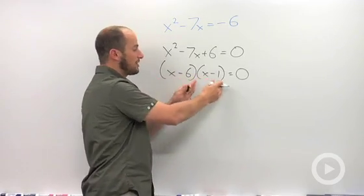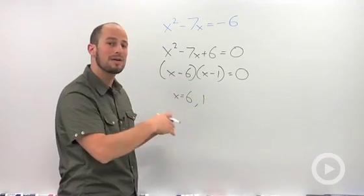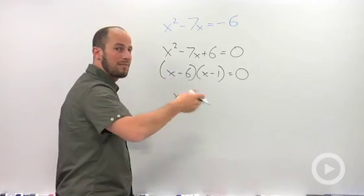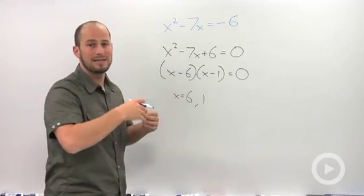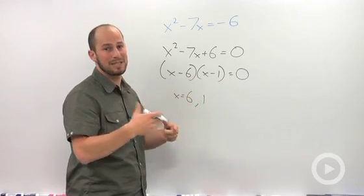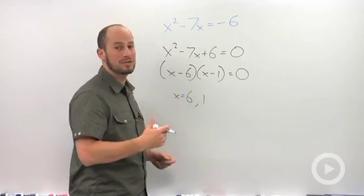As long as one of these terms is zero, you multiply them together and it equals zero as well. So whenever we're solving a polynomial: bring everything to one side, factor it out, and then knowing that two things being multiplied equal to zero means one of them has to be equal to zero, it's really easy to solve this out.